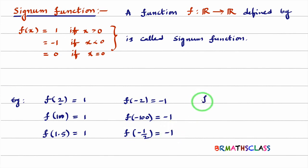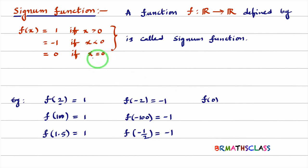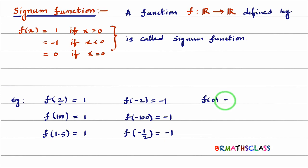What is f of 0? When x equals 0, we choose the third function, which gives 0. So f of 0 is 0. I hope you are understanding.